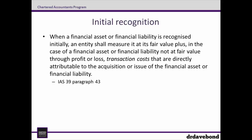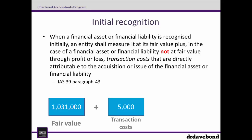The key word in all of this is 'not.' Available for sale financial assets are not the same category as financial assets or financial liabilities at fair value through profit or loss. As such, we do include the transaction costs into the initial measurement of the investment. There are two elements which we need: the first is fair value, which in this case is $1,031,000, and the second is the $5,000 of transaction costs.